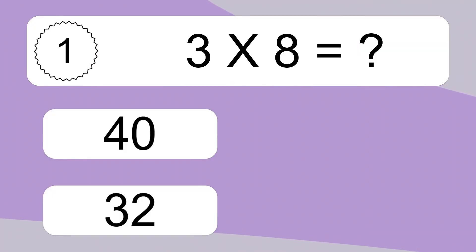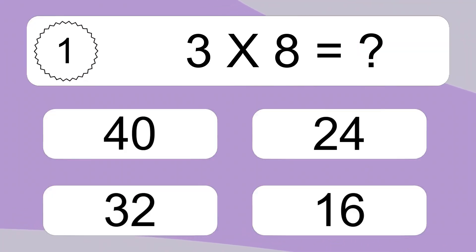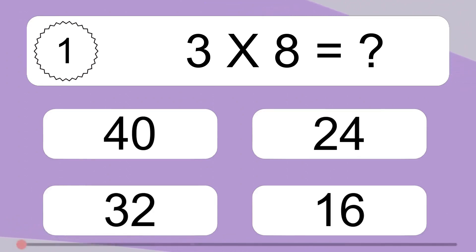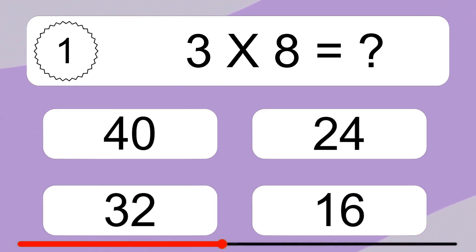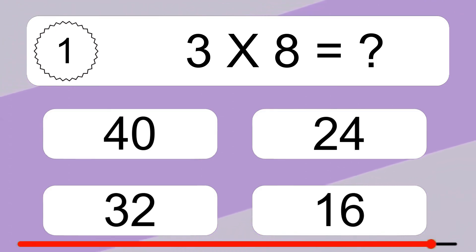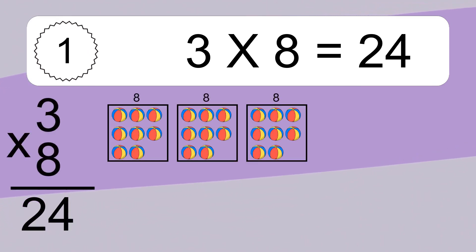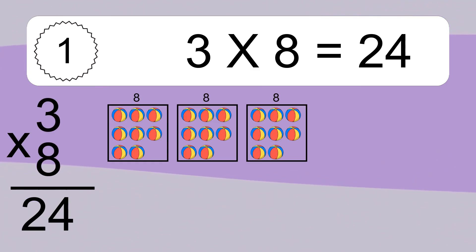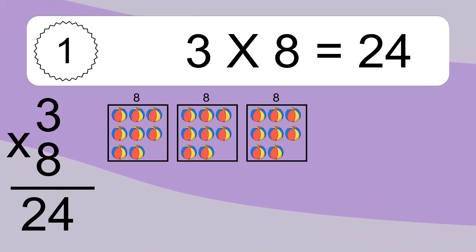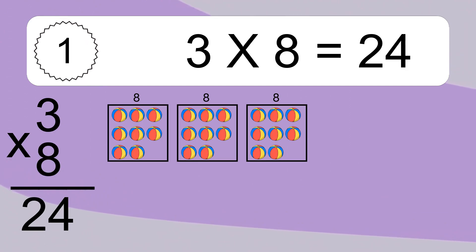3 times 8 equals what? 3 times 8 equals 24. We have 3 boxes, and each box has 8 colorful balls inside. If you count all the balls in all the boxes together, you will have 3 times 8 balls. This equals 24 balls.